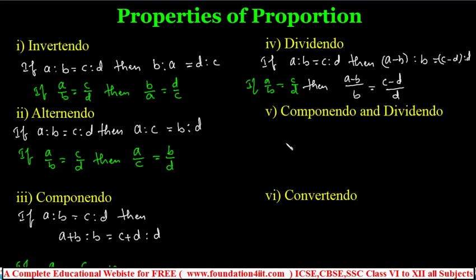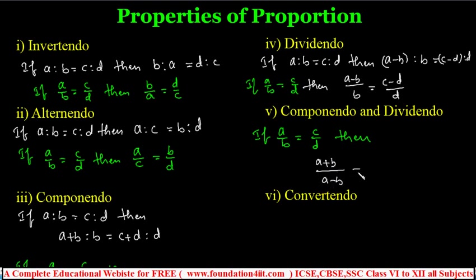Componendo and dividendo is the combination of addition and subtraction. If a by b equals c by d, then according to componendo and dividendo: a plus b by a minus b equals c plus d by c minus d. We mostly apply this combined rule in problems.